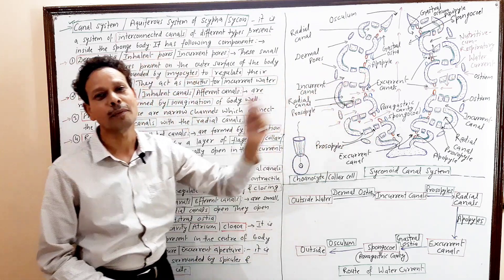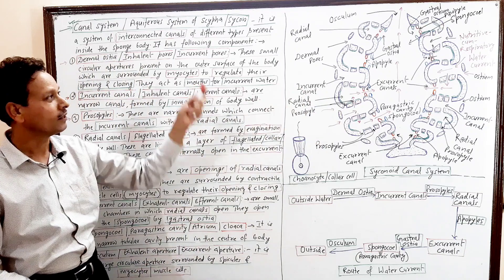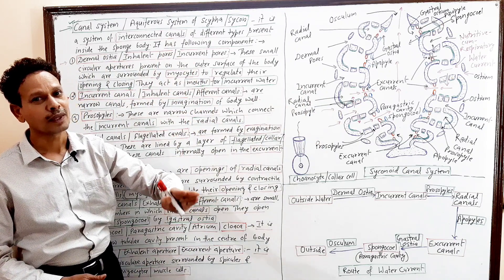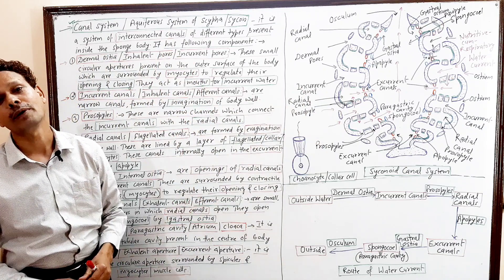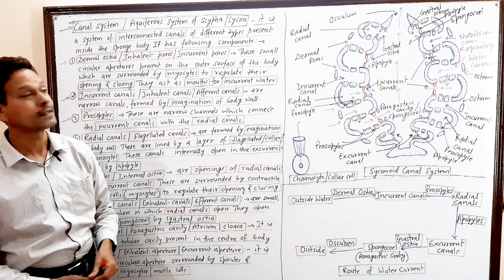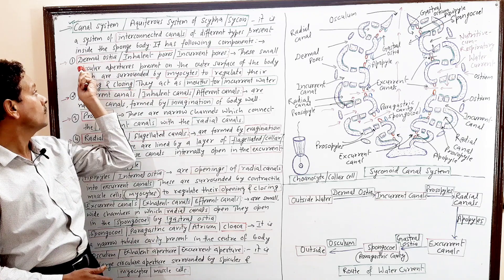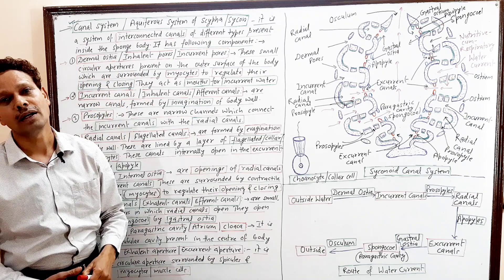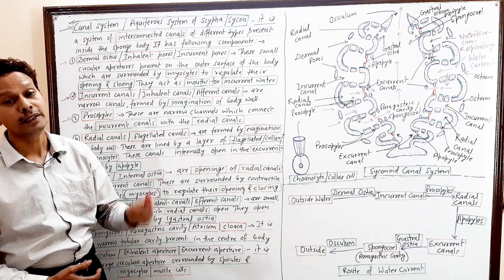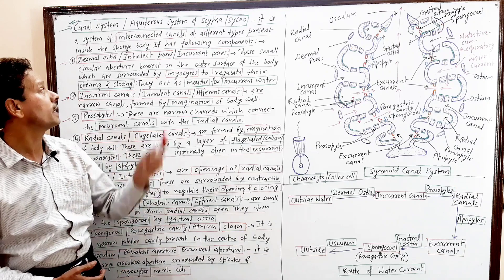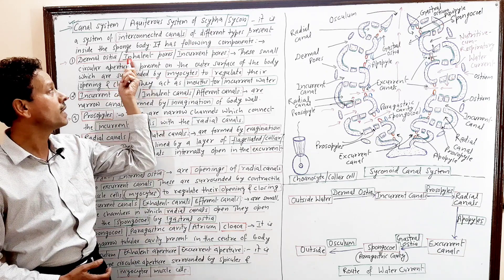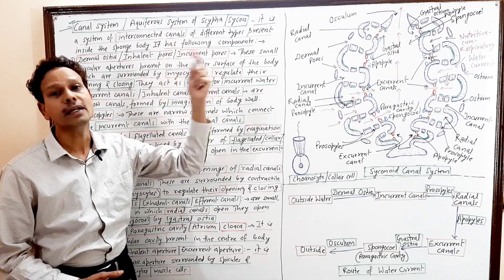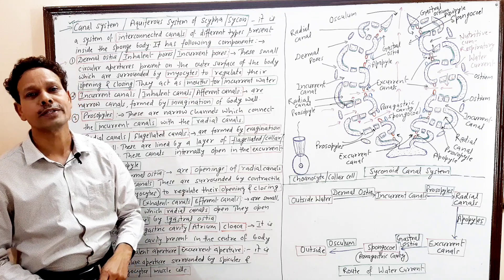This canal system, the aquiferous system, has the following components: Dermal Ostia — these are the inhalant parts, these are the incurrent parts.